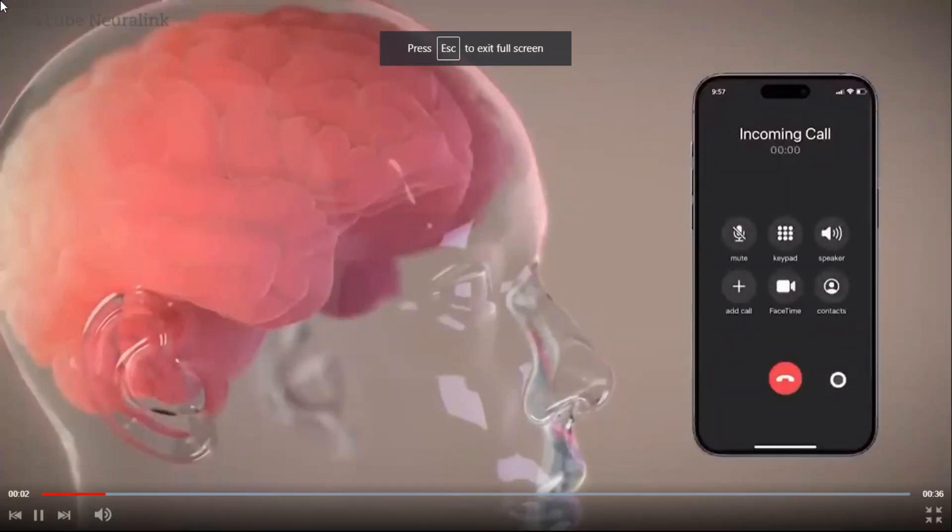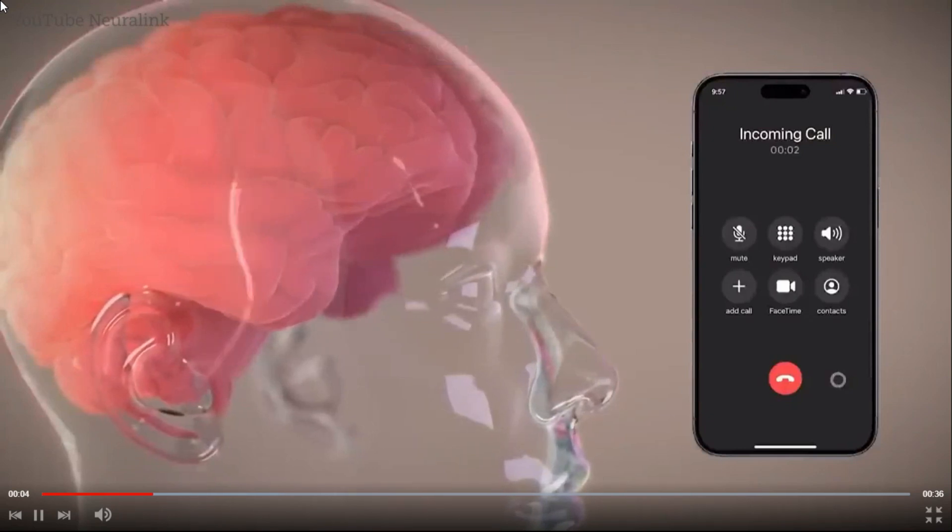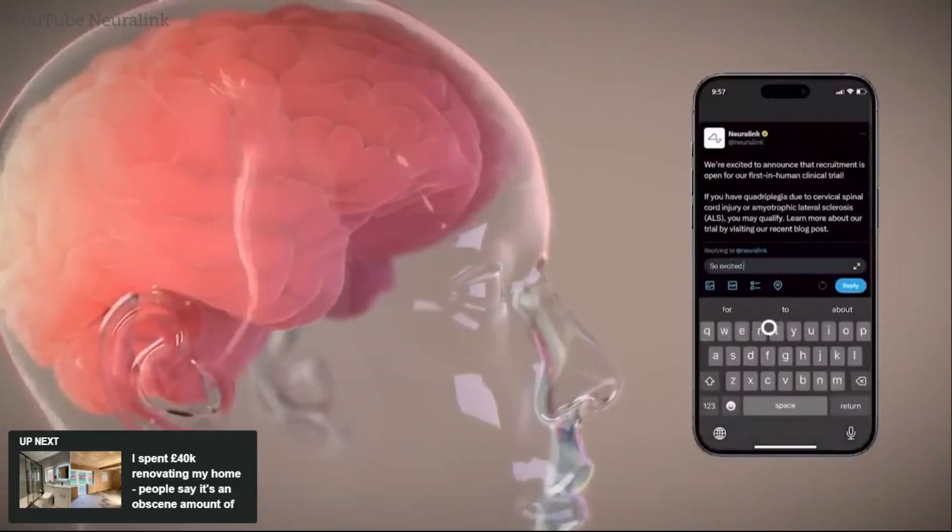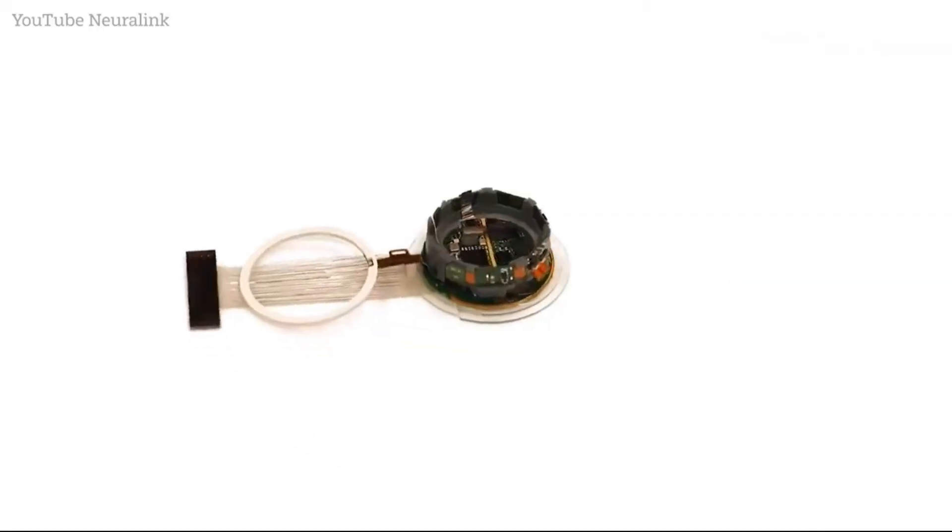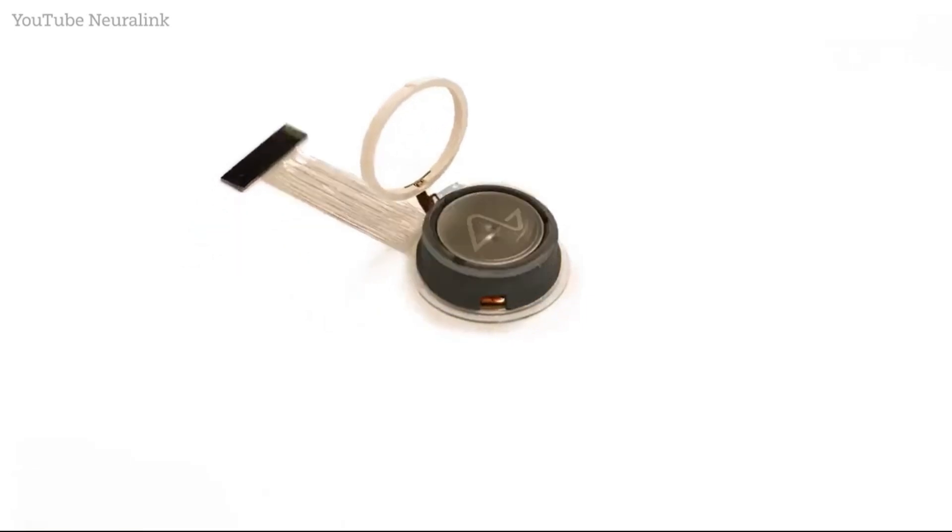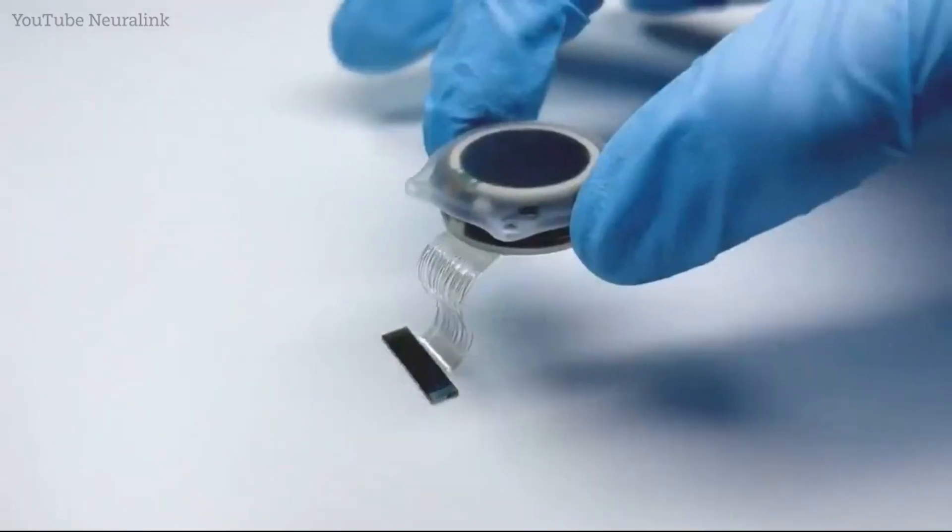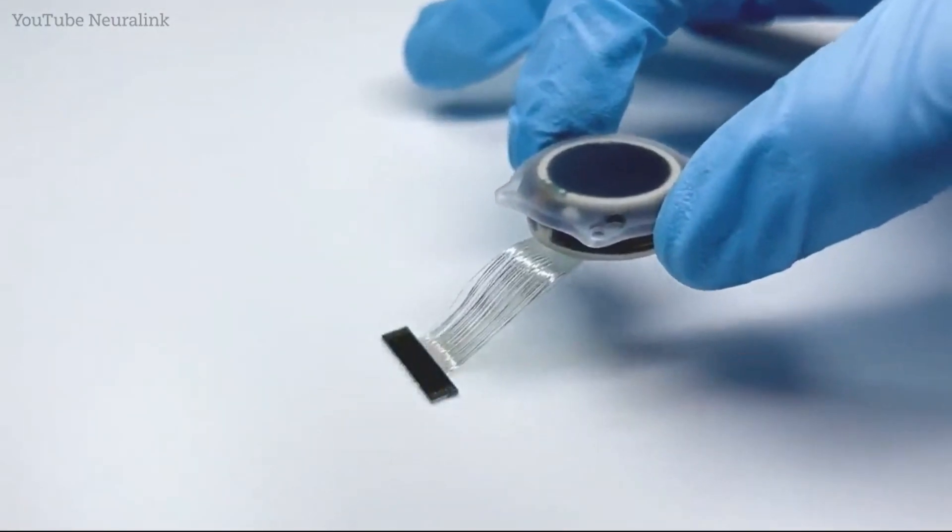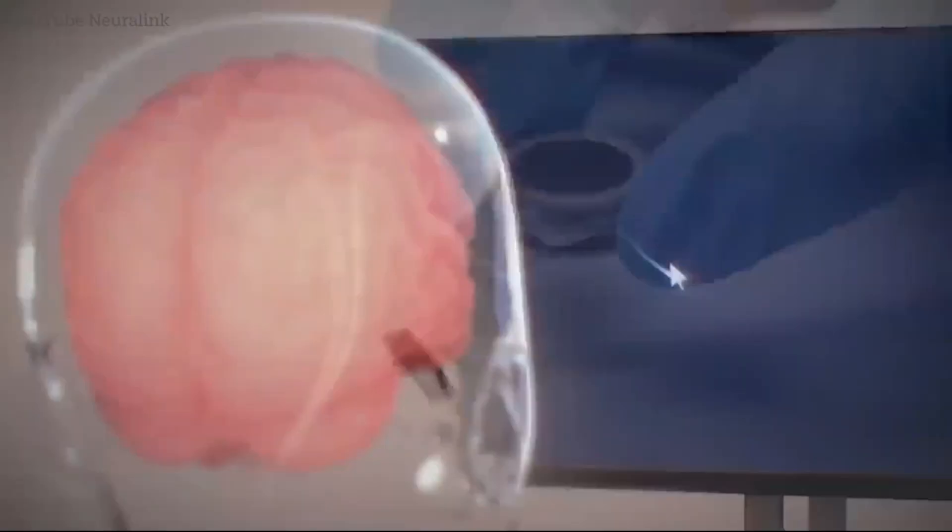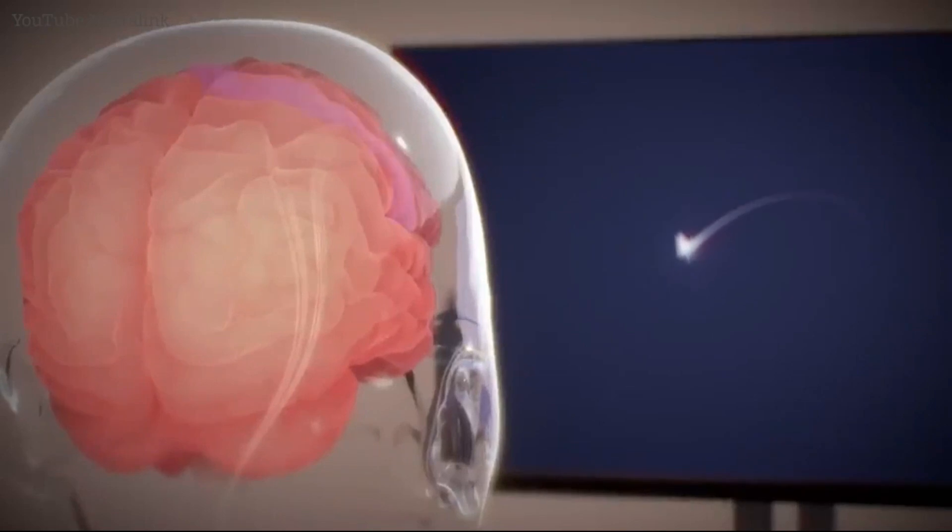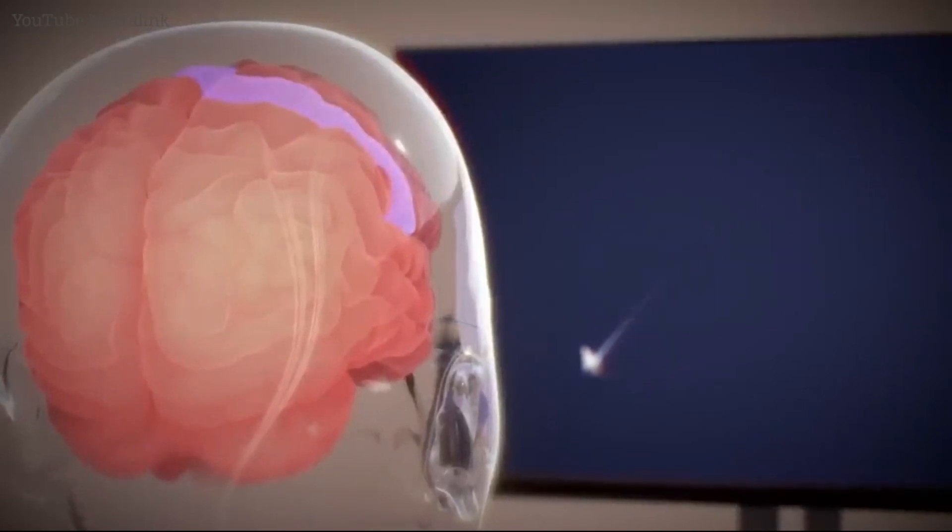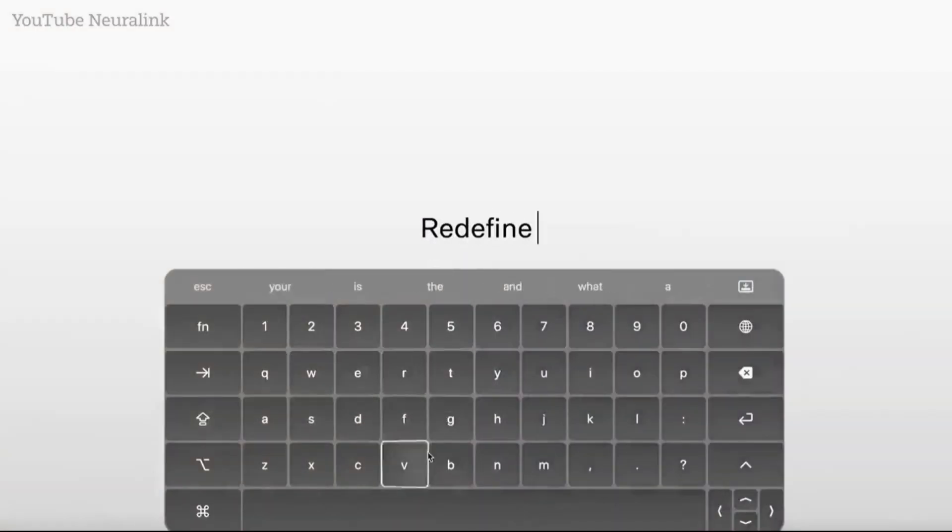Imagine connecting with your loved ones, browsing the web, or even playing games using only your thoughts. This is made possible by placing a small, cosmetically invisible implant in a part of your brain that plans movements. The device is designed to interpret your neural activity so you can operate a computer or smartphone by simply thinking about moving. No wires or physical movement are required.